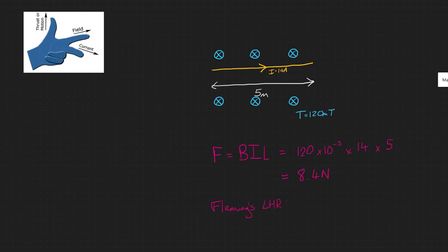You need to point your first finger in the direction of the magnetic field. In that case, that should be pointing into your screen, away from you. Your second finger, your middle finger, needs to point in the direction of the conventional current, so that's from left to right.